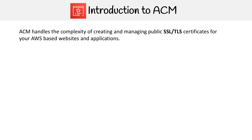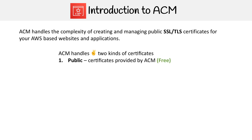ACM handles the complexity of creating and managing public SSL certificates for your AWS-based websites and applications. It handles two types of certificates: public, which are provided by AWS and are free, and private, which are certificates that you import and cost $400 per month. You generally just want to use a public certificate. If you've ever used Let's Encrypt, those are all public, so if you're comfortable with that, you're comfortable with these — just make sure when you're creating that certificate, you do not make the wrong choice.